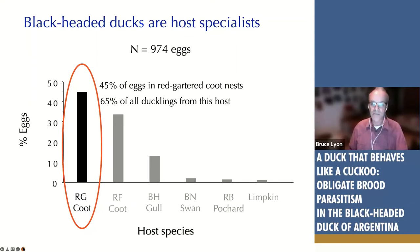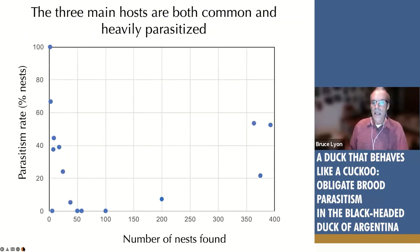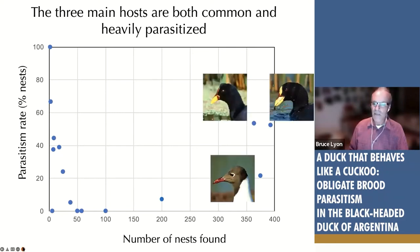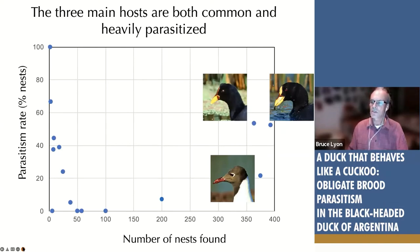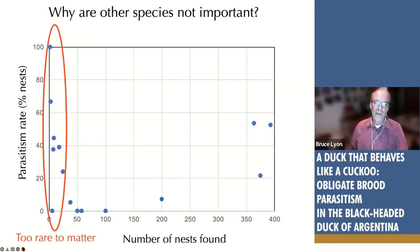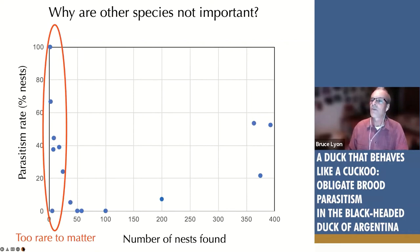So to summarize: for a species to be an important host, it has to be abundant and have a high parasitism rate. Other species are not numerically important for two reasons. First, they're too rare to matter — even if parasitized at a high rate, for example a limpkin at 100% parasitism but only two nests, that does not add up to many duck eggs in the population. Black-necked swans — only 18 nests. Coscoroba swans — only 8 nests, fairly highly parasitized but not many eggs.